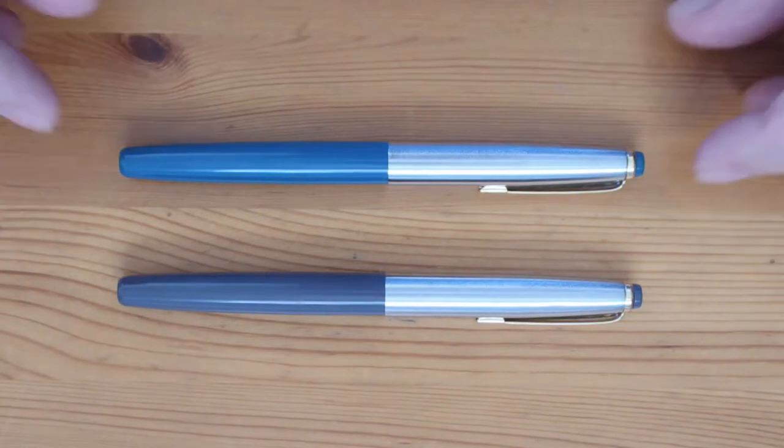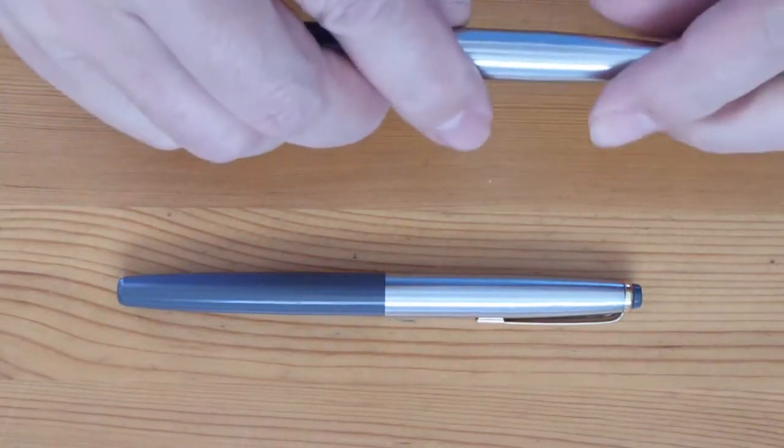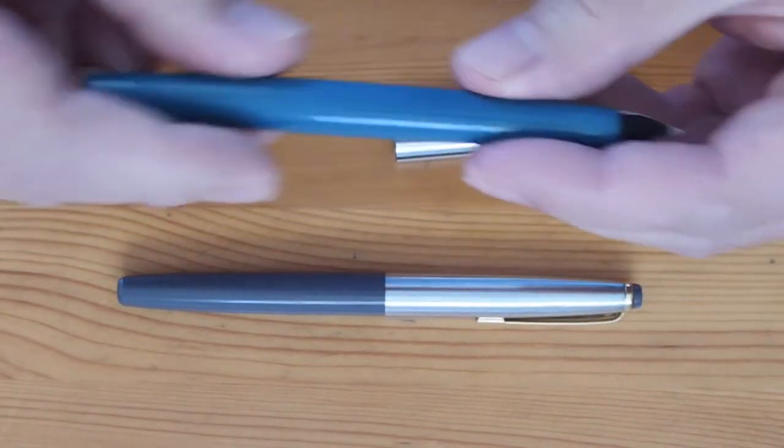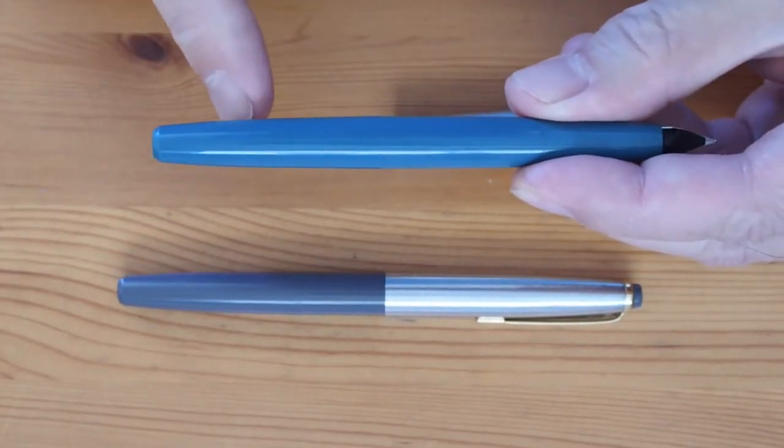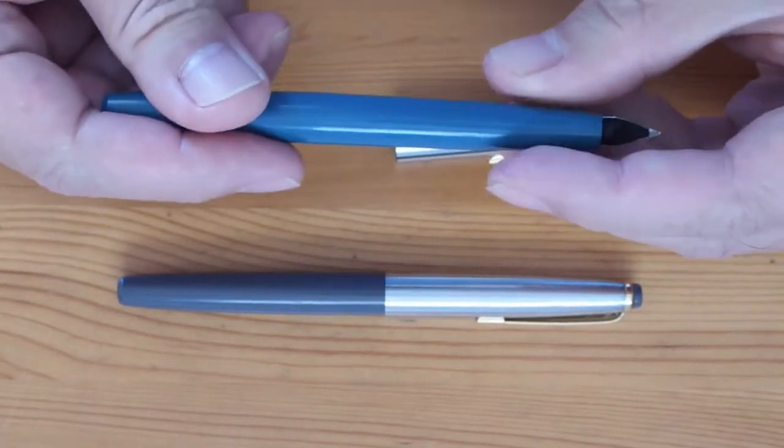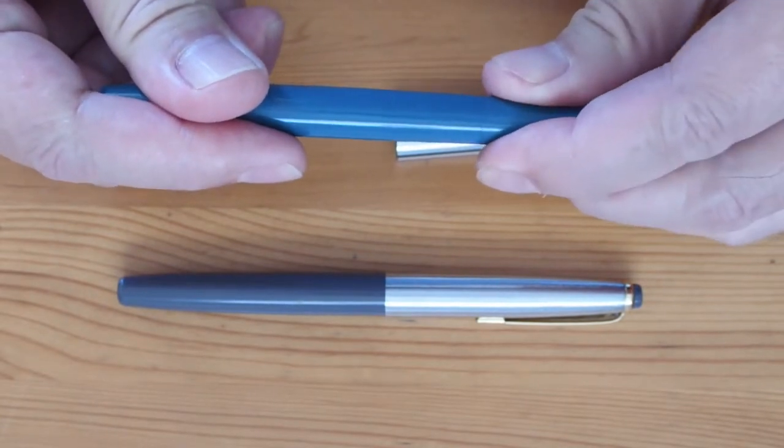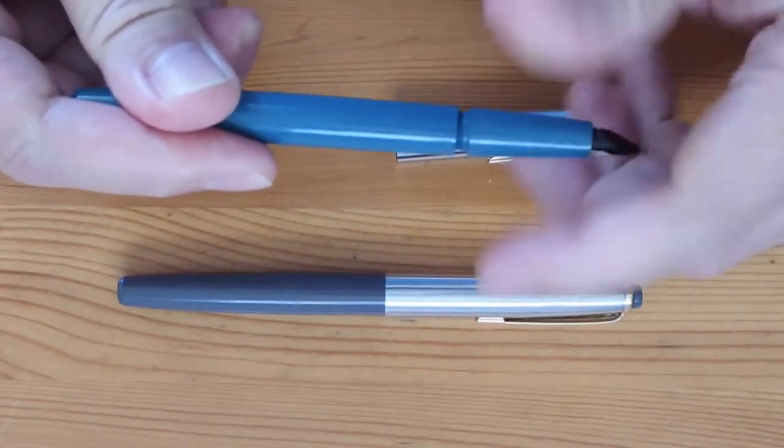The semi-inset nib is a definite confirmation until you suddenly realize that something is not quite right. Where is the piston knob? Realizing that the section can be screwed out of the barrel, you get even more confused.